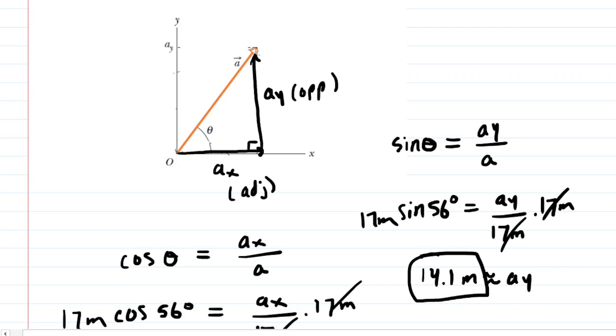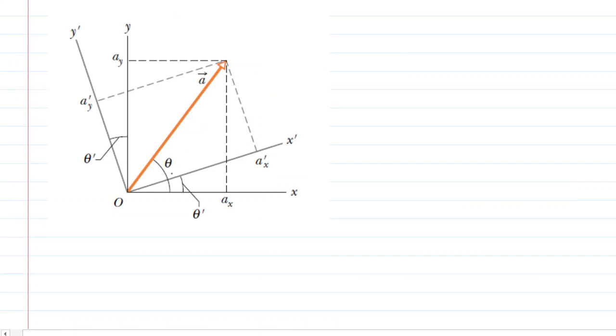So here is the original diagram. We know theta is 56 degrees, and now we introduce theta prime. That was given as 18 degrees. Now why don't we go ahead and highlight the new set of axes here. We have X prime, which is then perpendicular to this new Y prime axis right here. And what we want is the angle measured from that new X axis.